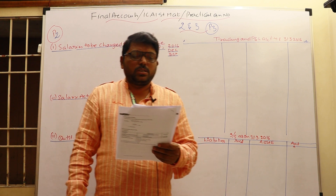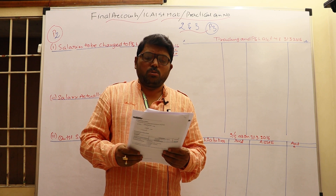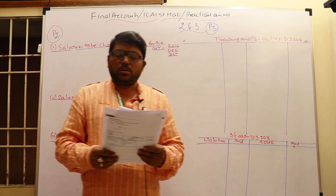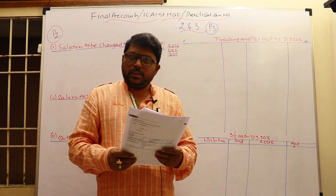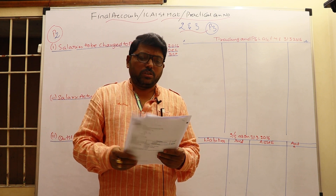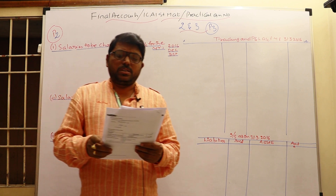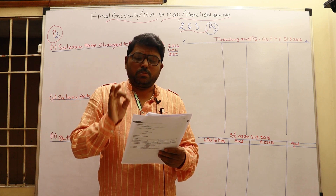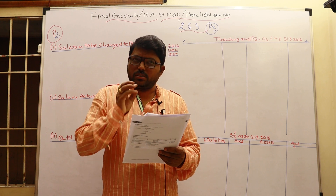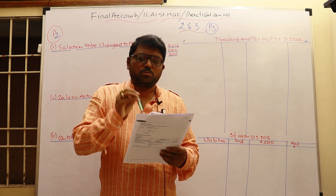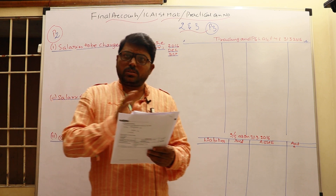Problem number two: Sian Gupta and Company employs a team of eight workers who are paid ₹30,000 per month. In the year ending 31st December 2015, all eight employees were paid ₹30,000 per month for a period of 12 months during 2015.